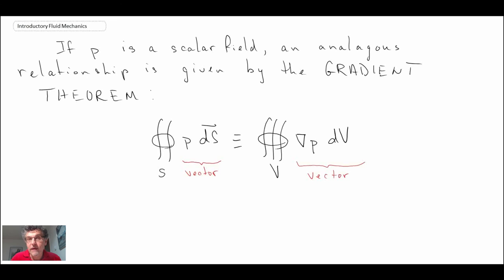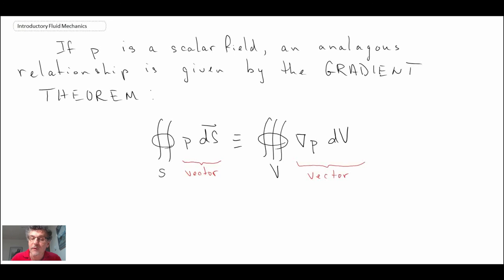Those are the three relationships: Stokes's theorem, Gauss's theorem, and the gradient theorem. You will encounter them in different parts of fluid mechanics, and depending on the data you have, you may use them in your analysis. That concludes the vector relationships in fluid mechanics. We'll continue by looking at fluid mechanics from a differential analysis perspective.